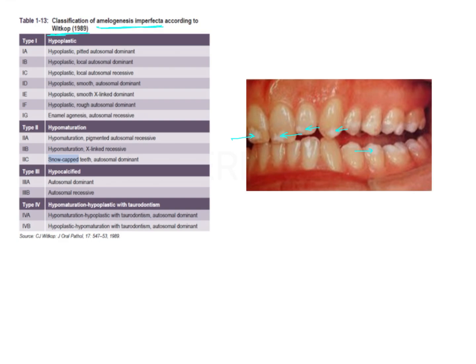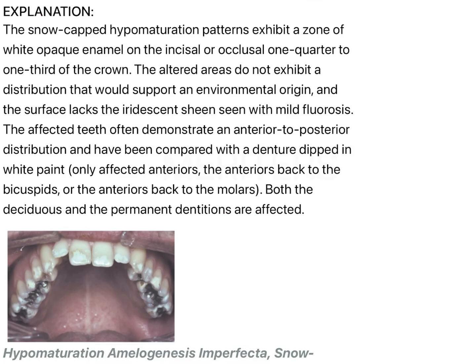This is Witkop's classification. The four types according to Witkop are: hypoplasia, hypomaturation, hypocalcification, and a combination with taurodontism. In the second variety (hypomaturation), snow capped teeth are seen, which is an autosomal dominant trait associated with amelogenesis imperfecta.